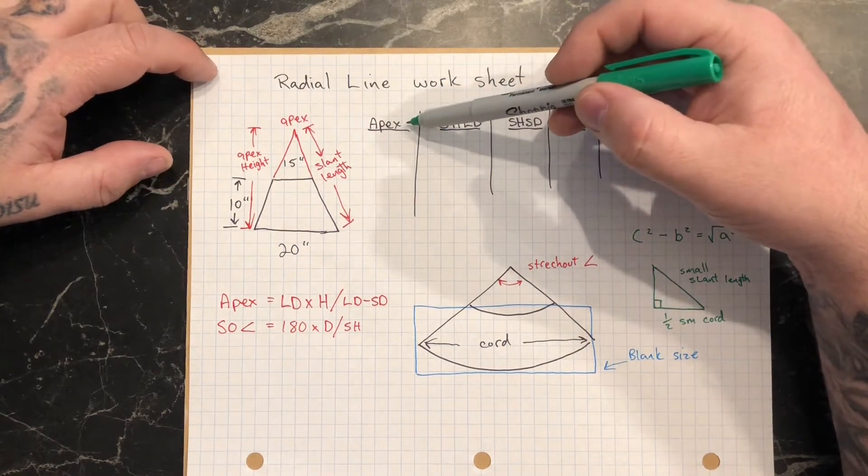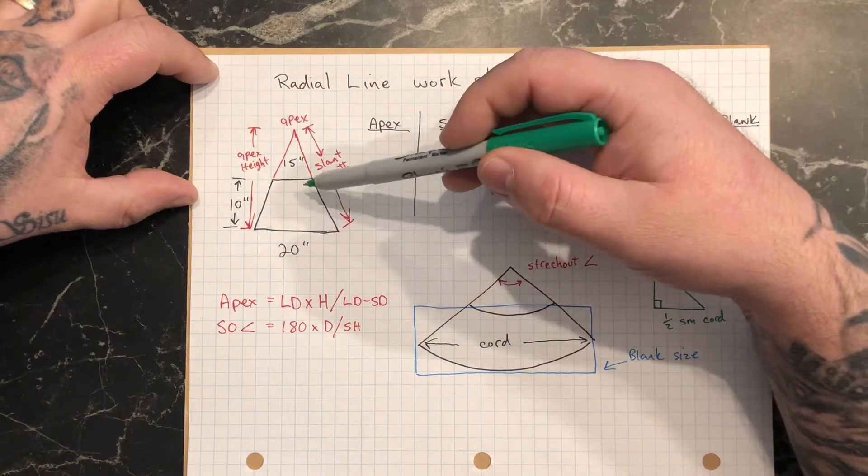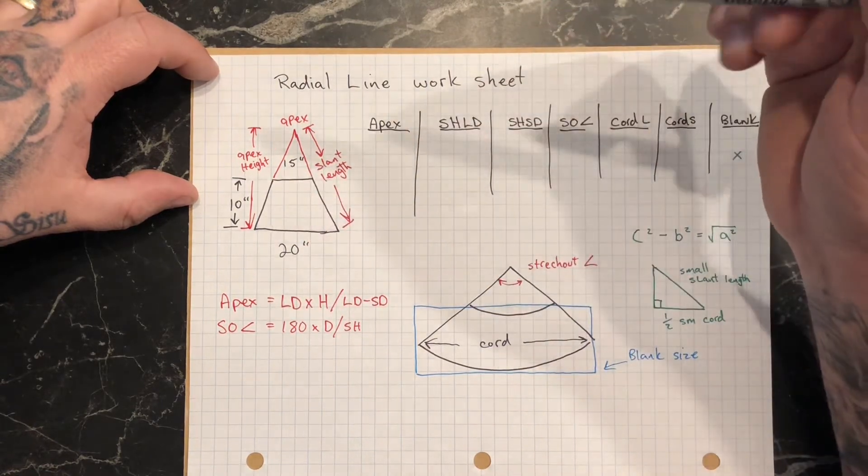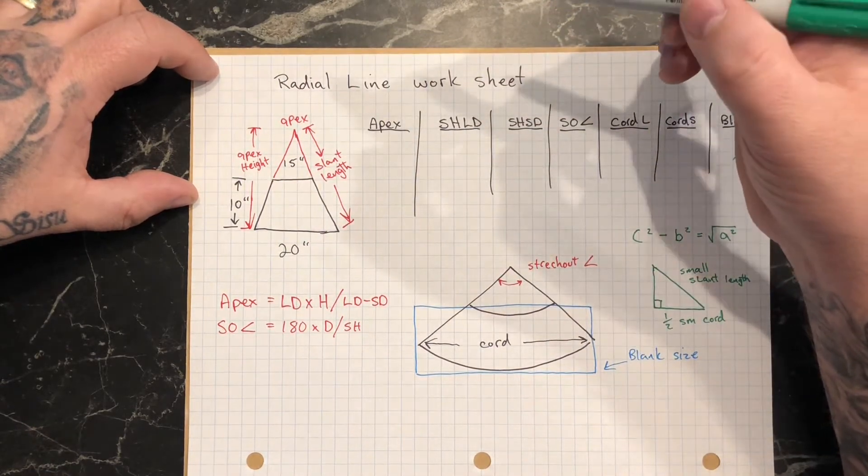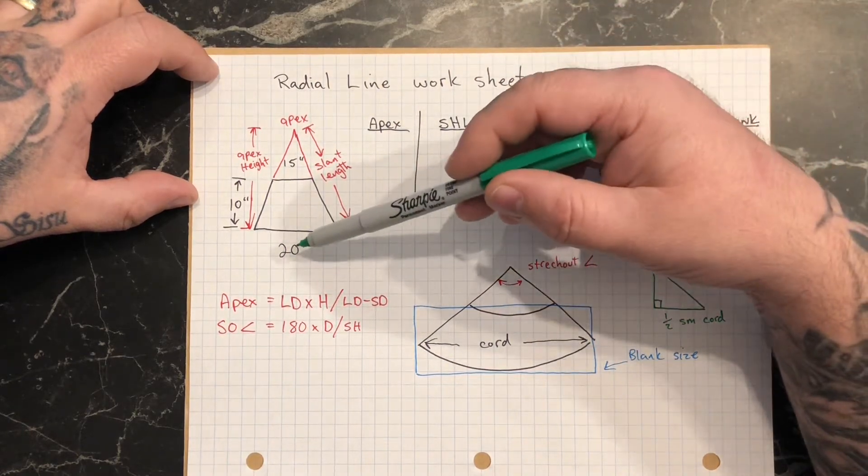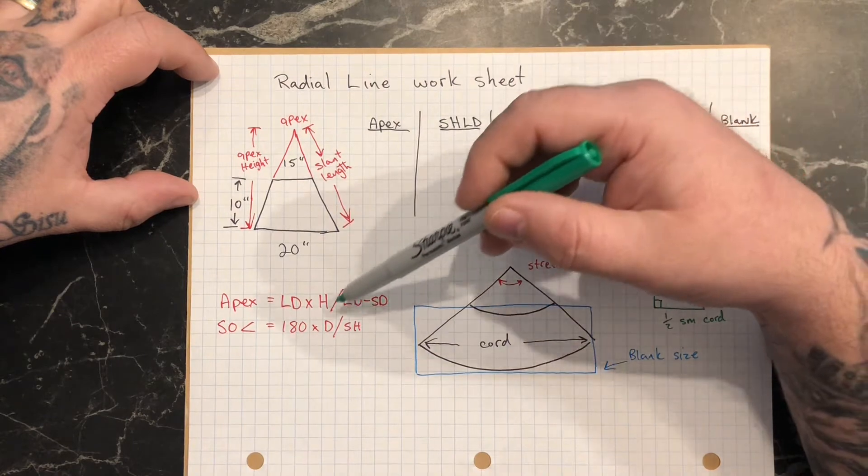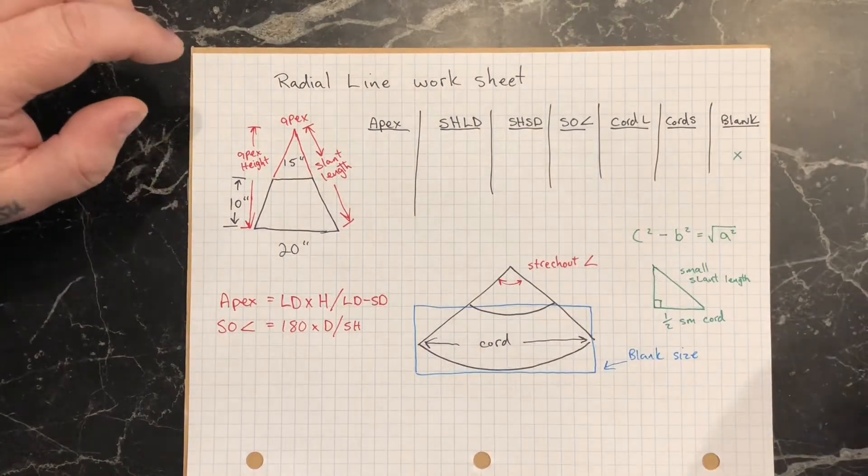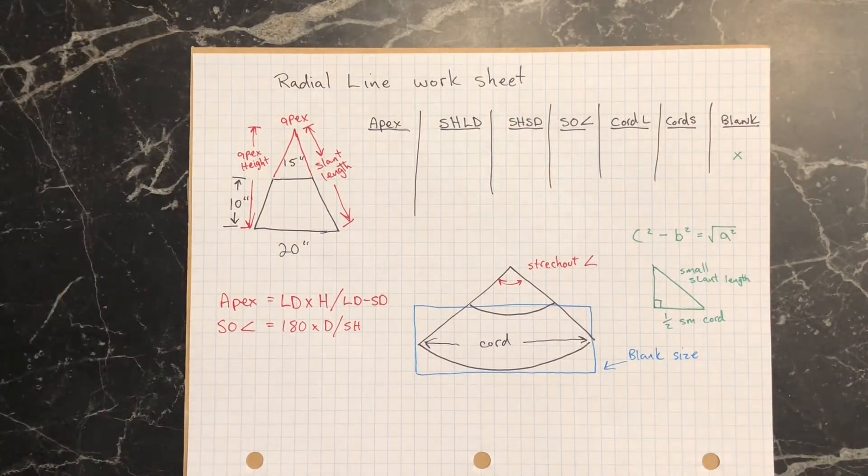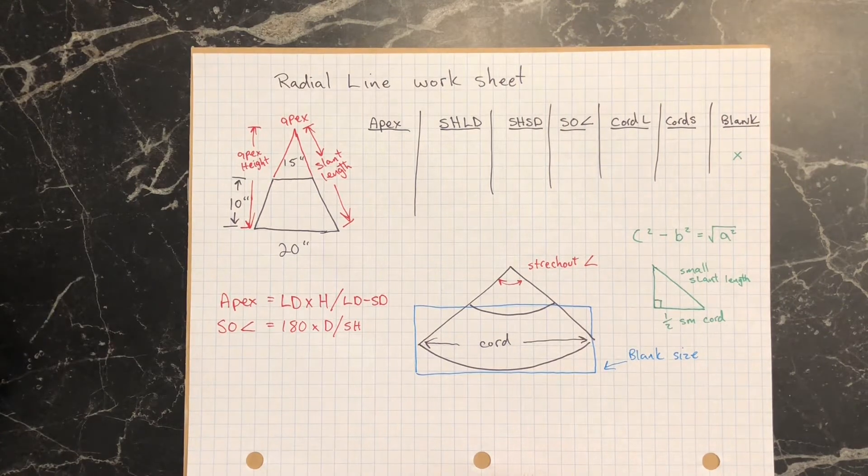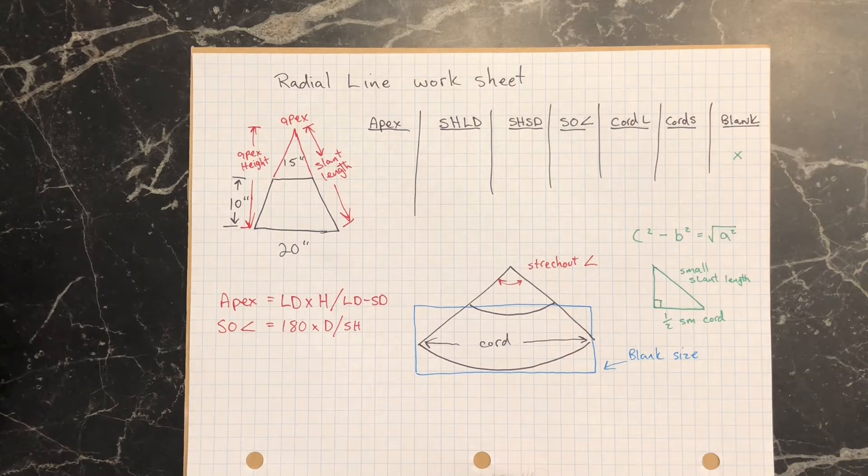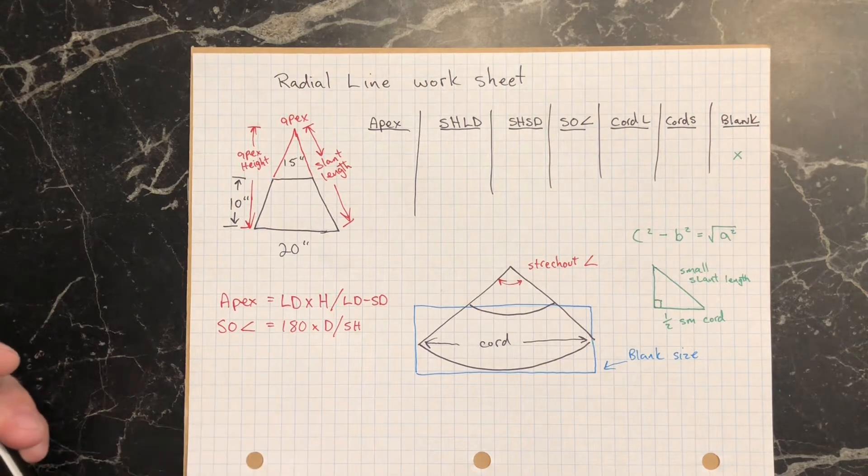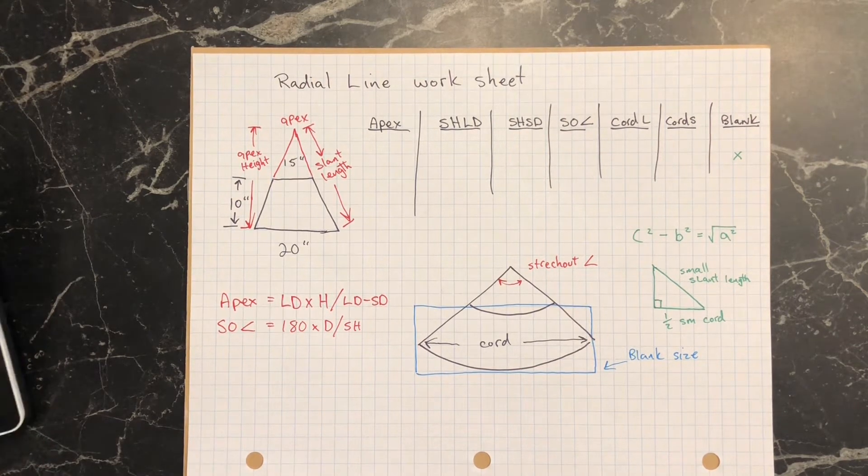So the first thing they're looking for is the apex. This is the third one on the worksheet, these dimensions here. I find it often handy to draw a little picture of what we're doing. So if we use that apex formula: large diameter times the height divided by large diameter minus small diameter. So it's gonna be 200 divided by 5. So the apex there should be 40.